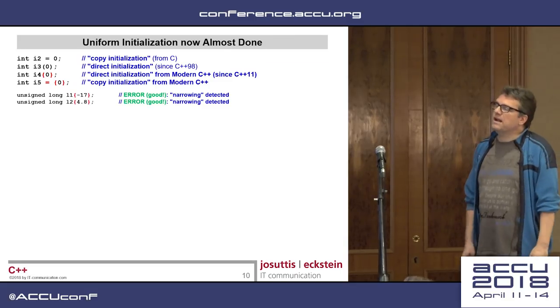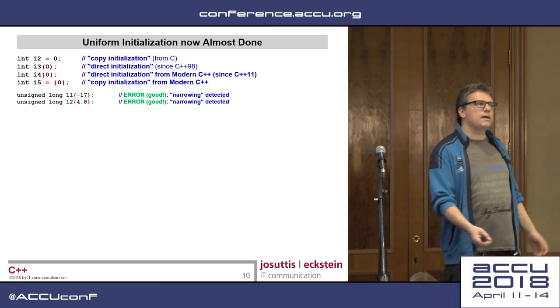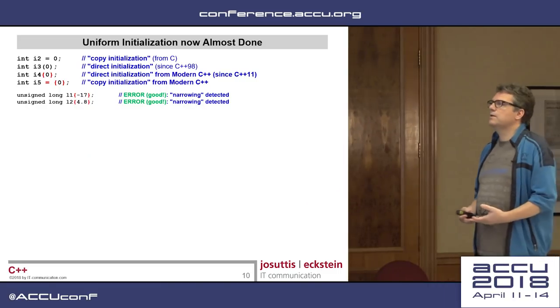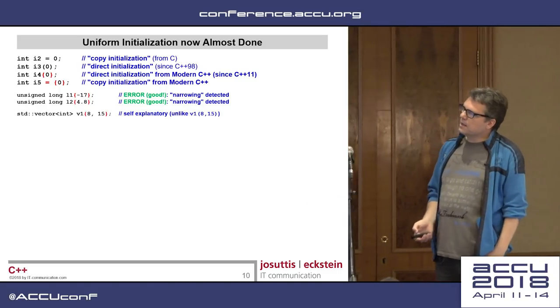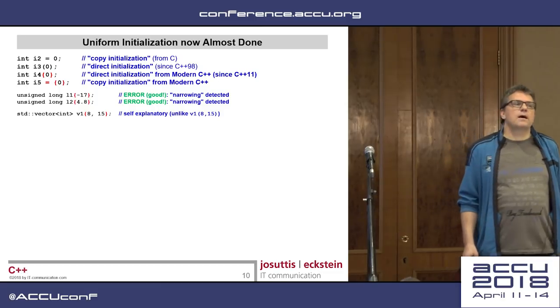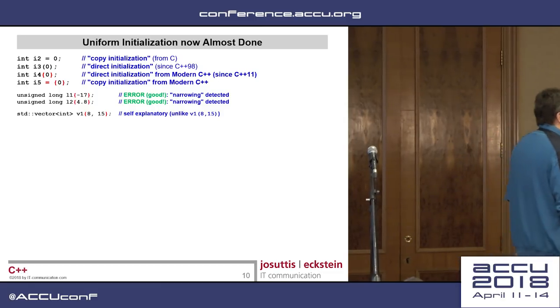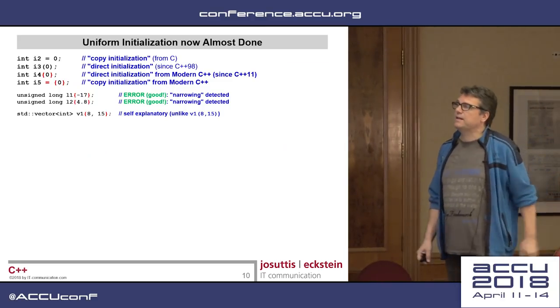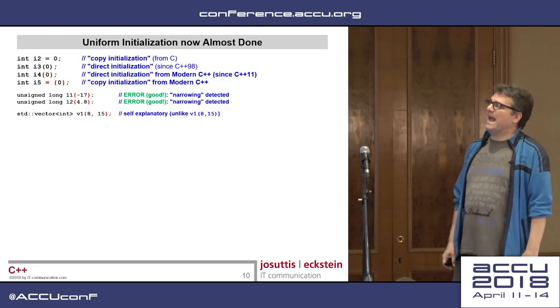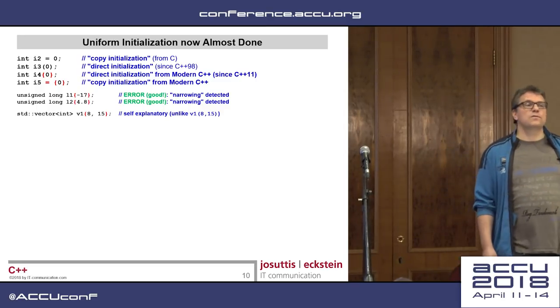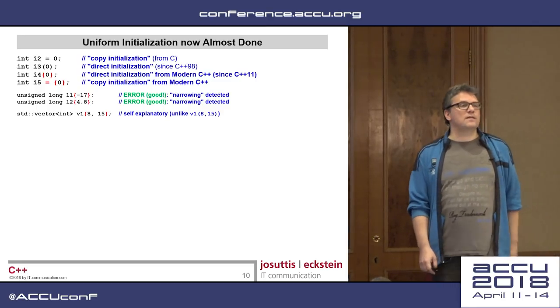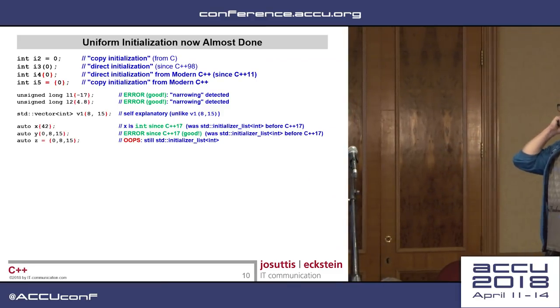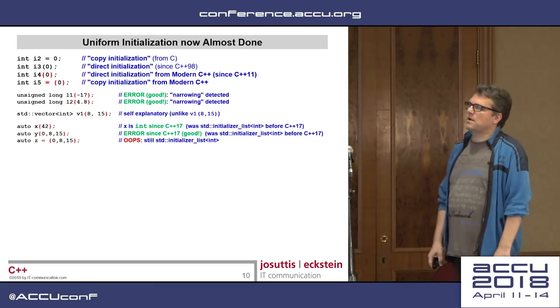First of all, in C++11, braces were better already by detecting narrowing. So if you pass a negative or floating-point value to an unsigned integral type. It worked better when we had something like a vector of string, because this is self-explanatory code creating, initializing a vector of having the values 8 and 15. If you used, you know that probably parenthesis here, you have a very surprising result.